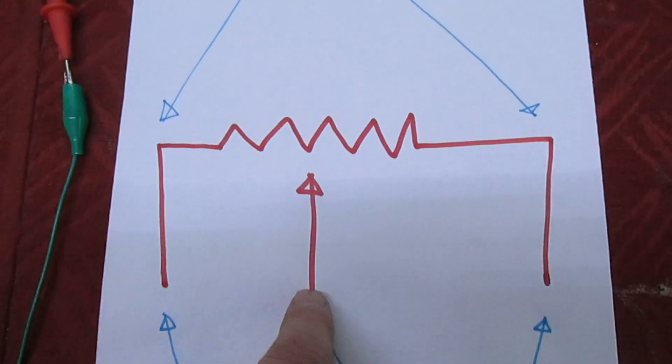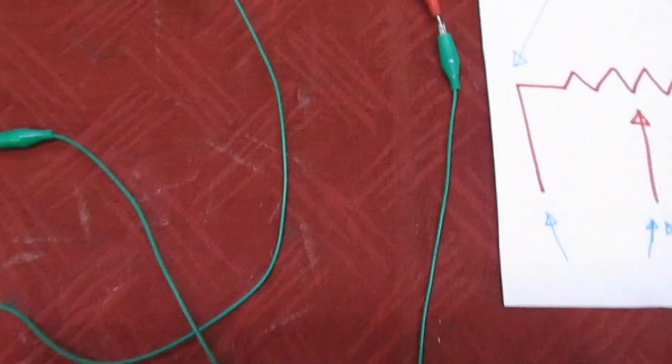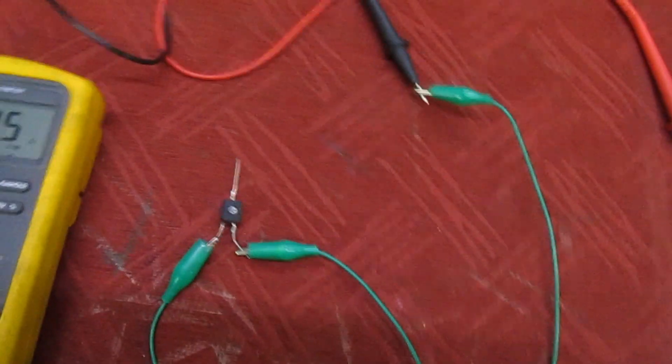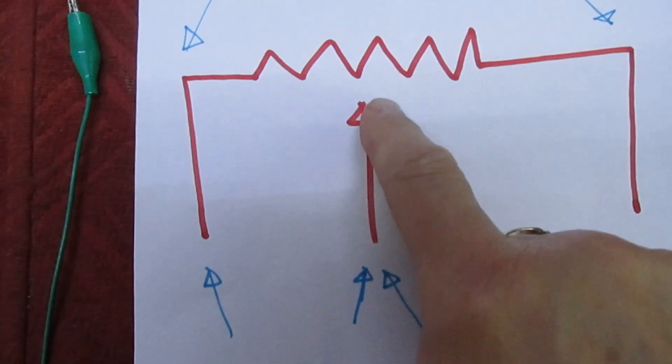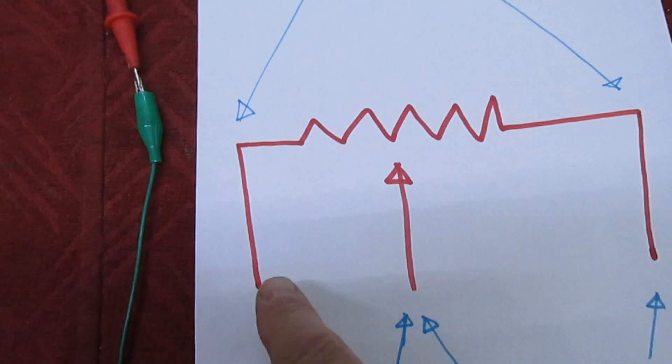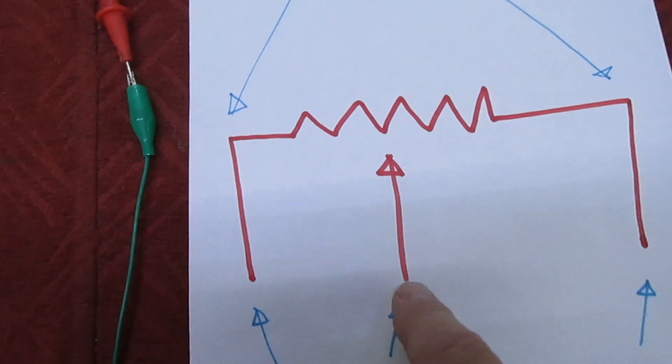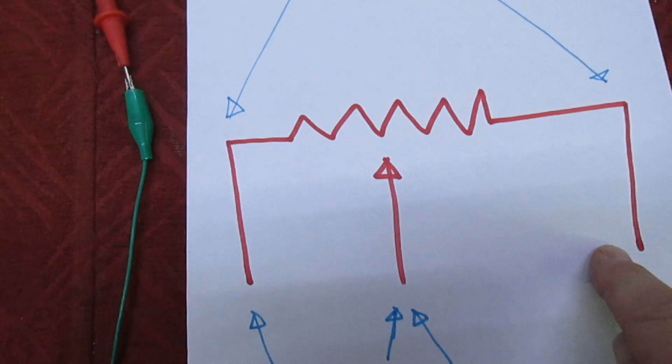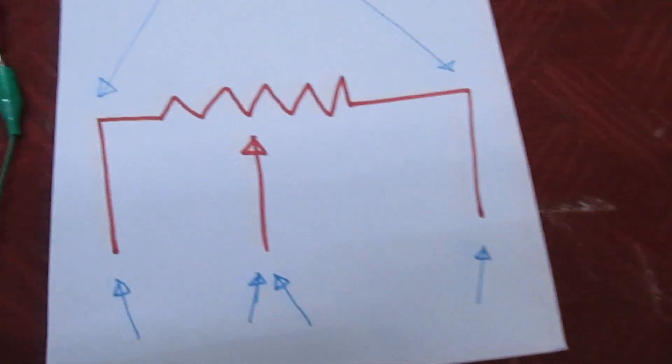Just assuming that the wiper was set to the middle, if this is a 100 ohm pot you'd have 50 ohms between there and 50 ohms between there. So let's just take a measurement and write it down.